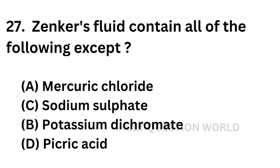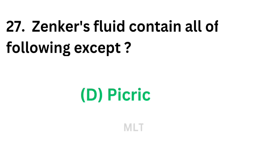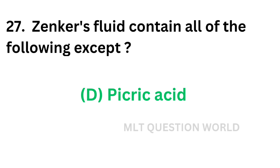Question number twenty-seven: Zenker's fluid contains all of the following except — Option A: Mercuric chloride, Option B: Potassium dichromate, Option C: Sodium sulfate, Option D: Picric acid. The correct answer is Option D — Picric acid. Zenker's fluid contains all of the components except picric acid.